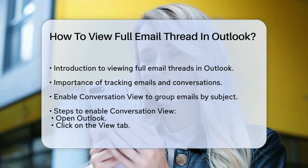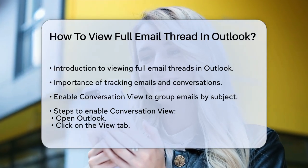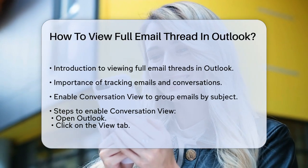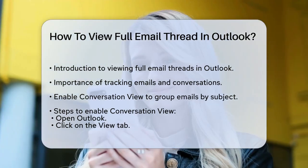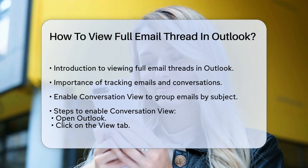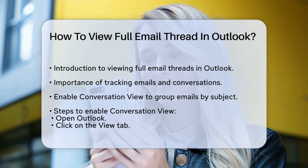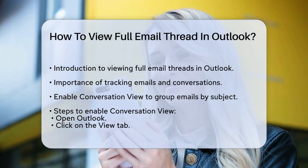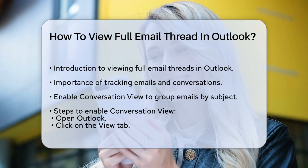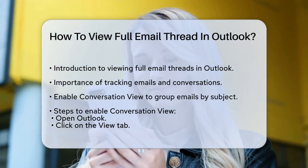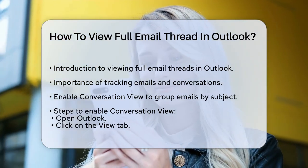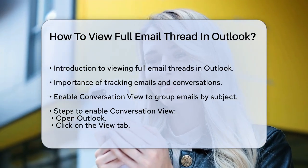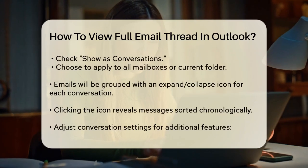First, you need to enable the conversation view in Outlook. This feature groups emails with the same subject line together, making it easier to follow a conversation. To do this, open Outlook and click on the View tab at the top of your screen. Look for the option that says Show as Conversations and check the box if it's not already checked. You can choose to apply this to all mailboxes or just the current folder.